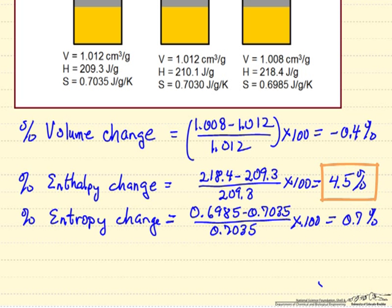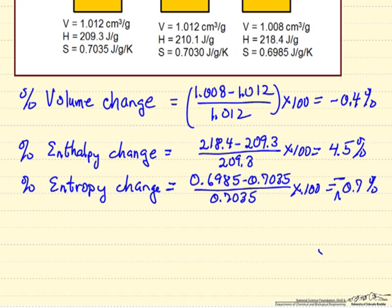the biggest change is enthalpy, enthalpy increases, the entropy, this is a negative sign here, decreases, but keep in mind this is 100 atmospheres pressure.